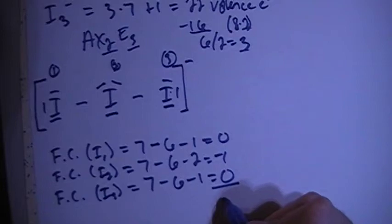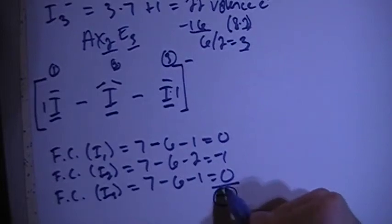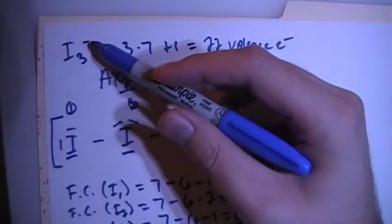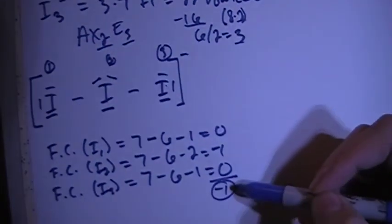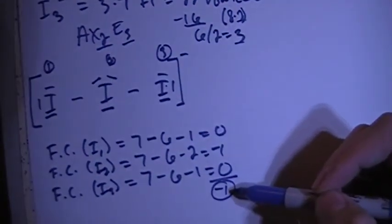So the net formal charge is minus one, which is good because that's what we're looking for. It matches up with the charge on the ion - that's how it's supposed to work.